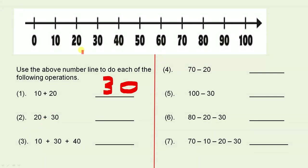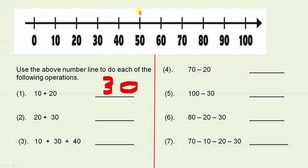Twenty plus thirty. The pencil is on the twenty because that's the first number. The next number is thirty, so we count by tens: ten, twenty, thirty. We landed on the fifty, so the answer is fifty.